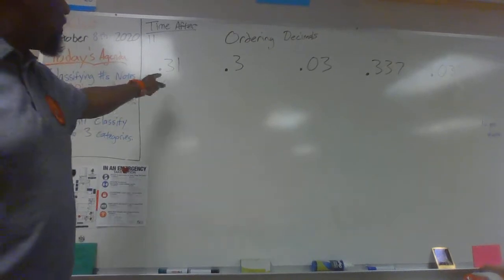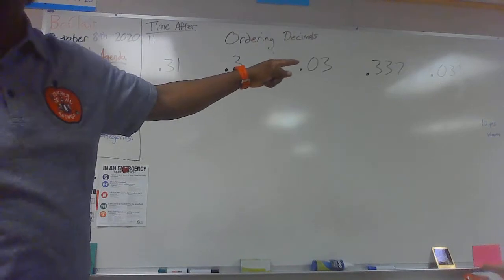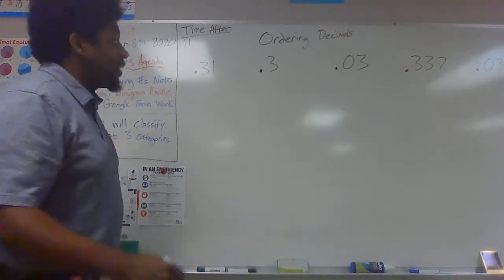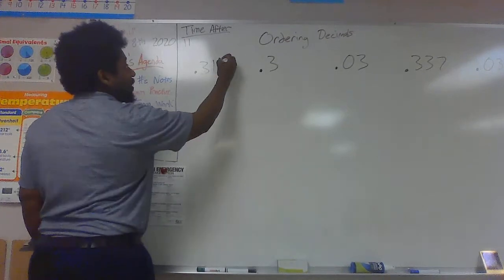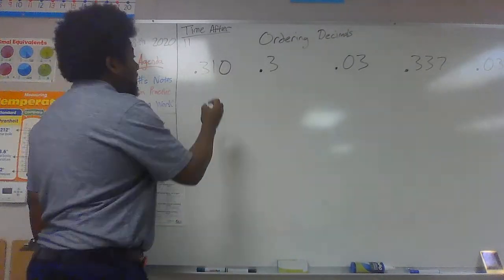We have thirty-one hundredths, three tenths, three hundred thirty-seven thousandths, and thirty-one thousandths all the way down there. But when we add our place value zeros, because we can have them all go to thousandths, it doesn't actually change your value. It makes it easier to see which is the largest and which is the smallest.